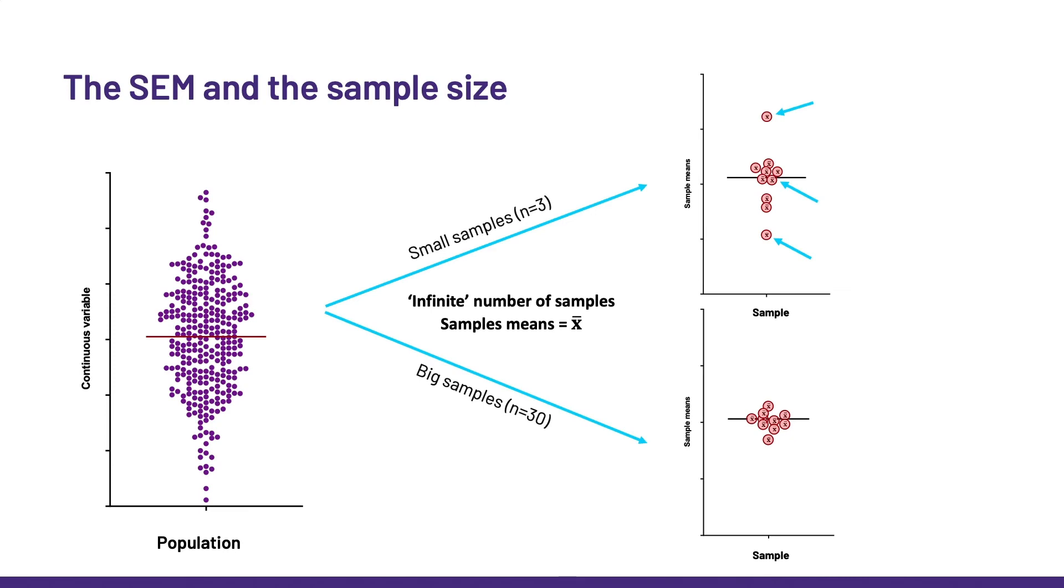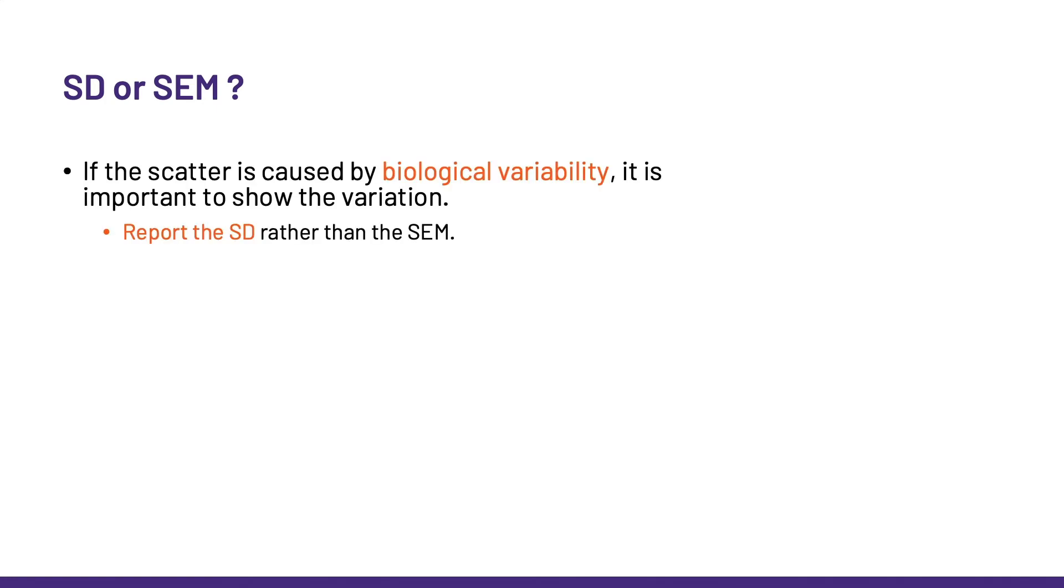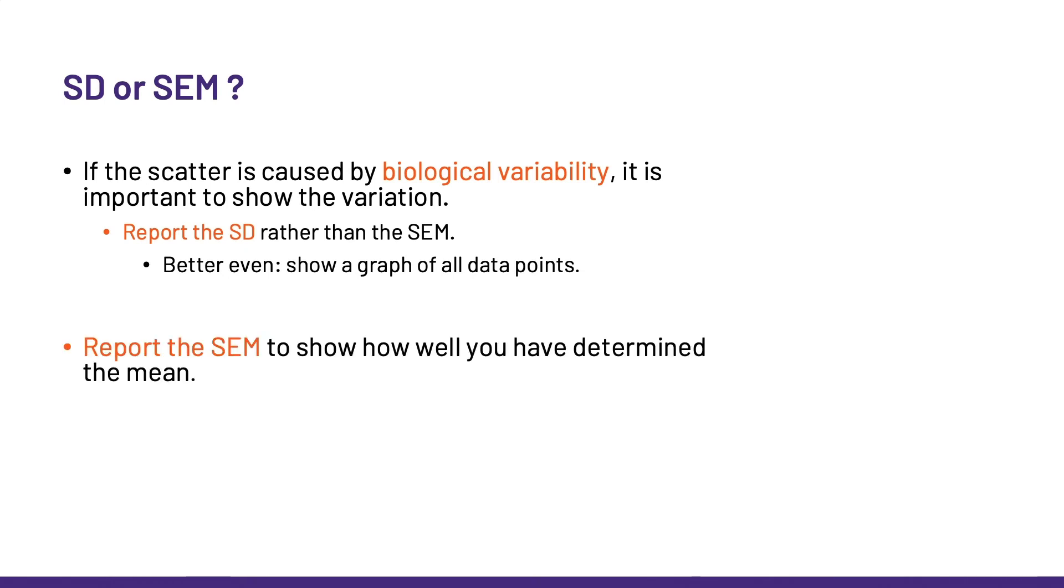So, which one to go for? Well, it depends, really. It depends on what we want to say. If we want to report on the biological variability of the data, then the standard deviation is the one to go for. Better even, let's show all the data points on the graph. But if we want to report how well we think we are determining the mean, then the standard error of the mean is the one we should choose. But the thing we should never do is go for the standard error of the mean because it looks better on the graph. Remember, the two are telling us very different things about our data.